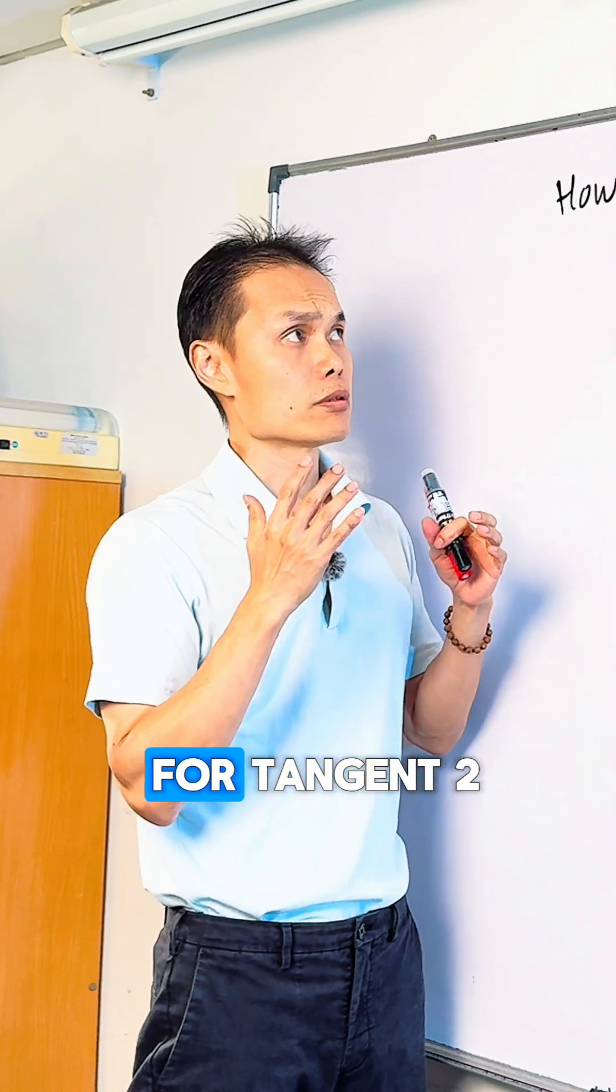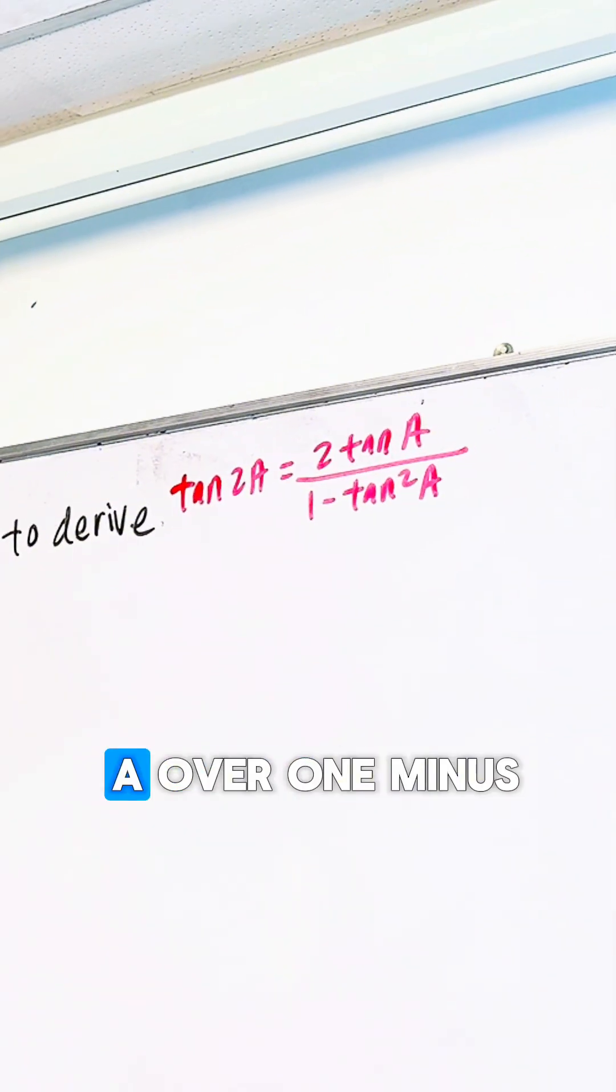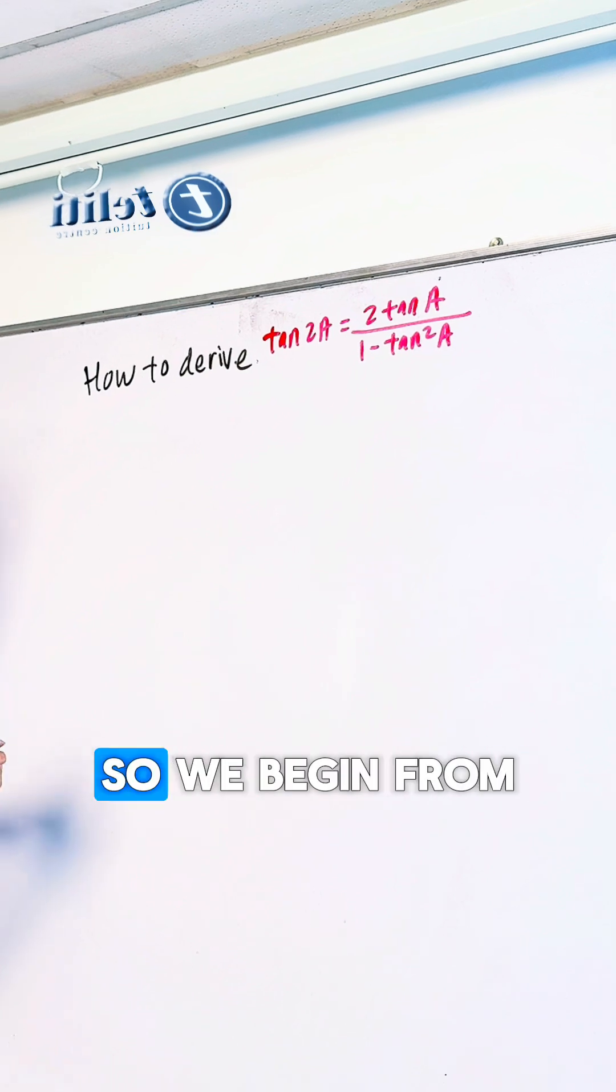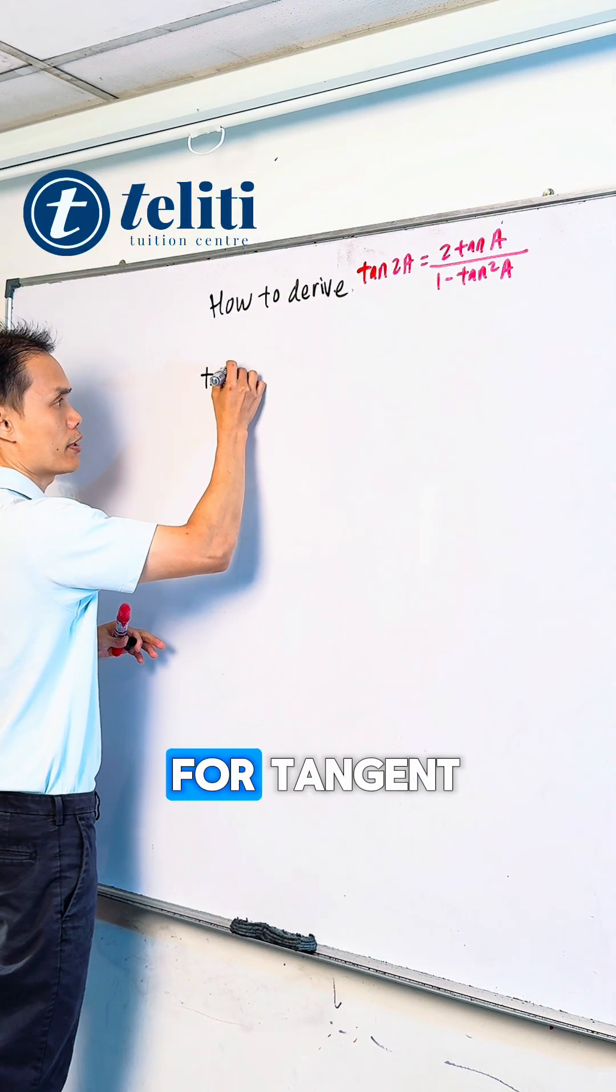How to derive the formula for tangent 2A equals 2 tan A over 1 minus tangent square A. So we begin from the double angle formula for tangent,